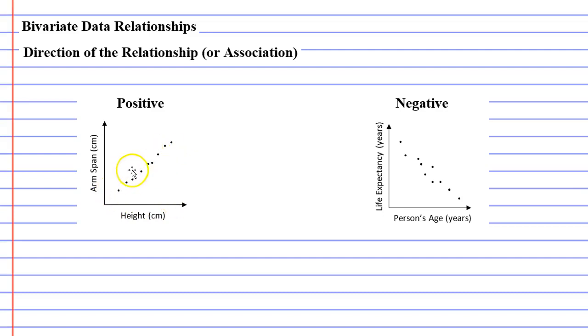Whereas on the right, it's coming downwards. This is a negative relationship. As a person's age increases, the life expectancy comes down.